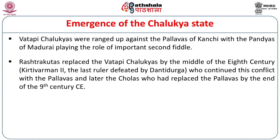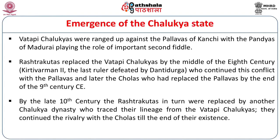When the Rashtrakutas replaced the Vatapi Chalukyans by the middle of the 8th century — with Kirti Varman II being the last Chalukyan ruler defeated by Dantidurga — the conflict with the Pallavas continued. Later, when the Cholas replaced the Pallavas in the Tamil Nadu region by the end of the 9th century, the Rashtrakutas and Cholas continued to fight. When the Kalyani Chalukyans replaced the Rashtrakutas, they too continued fighting the Cholas until the end of their existence.